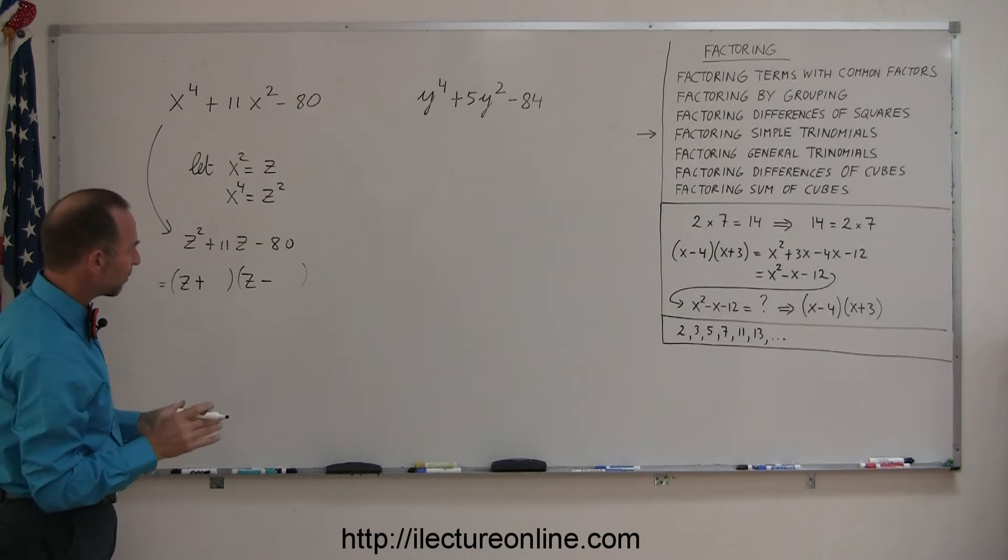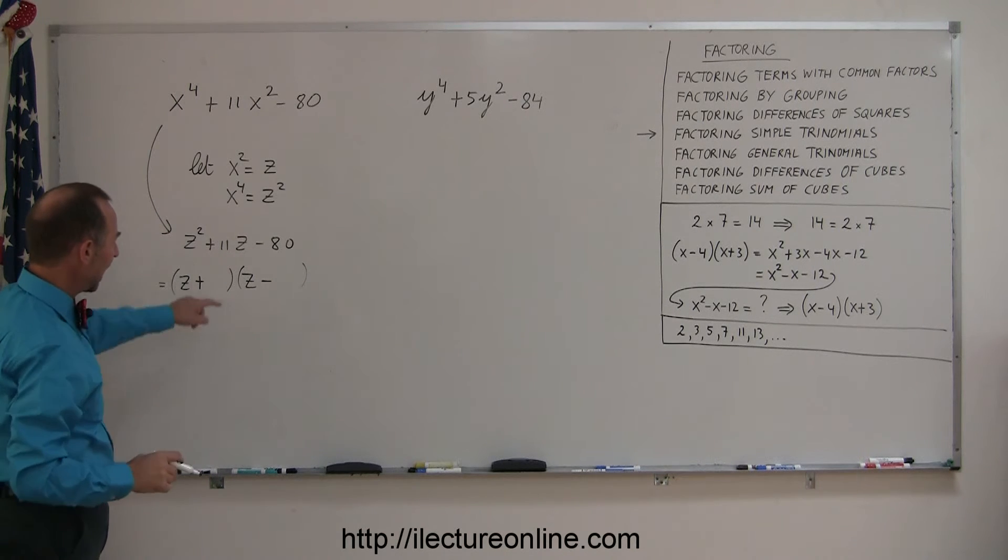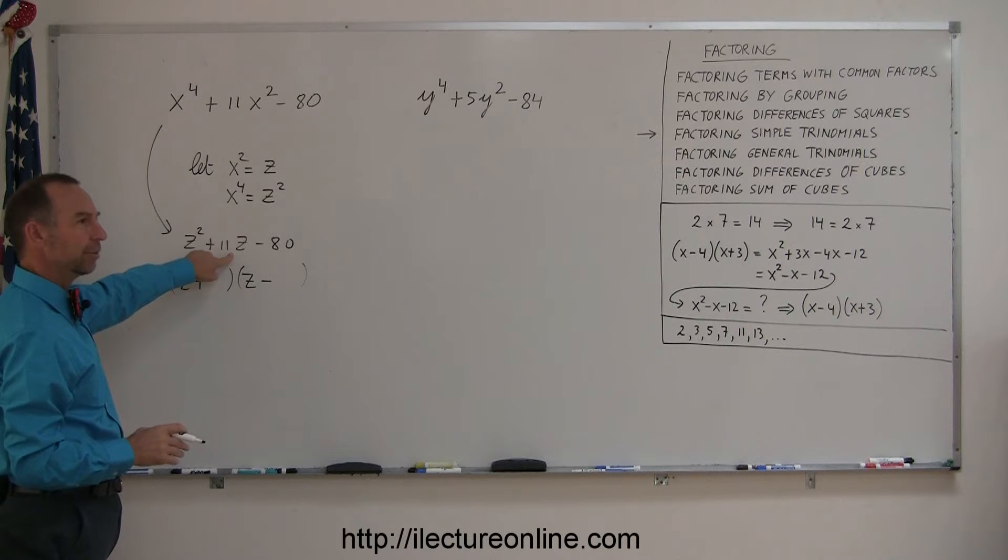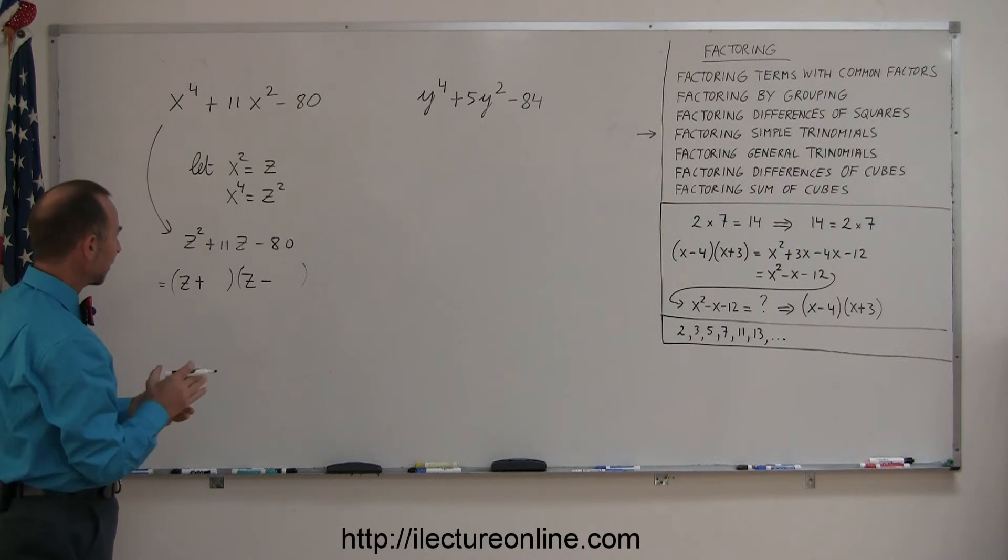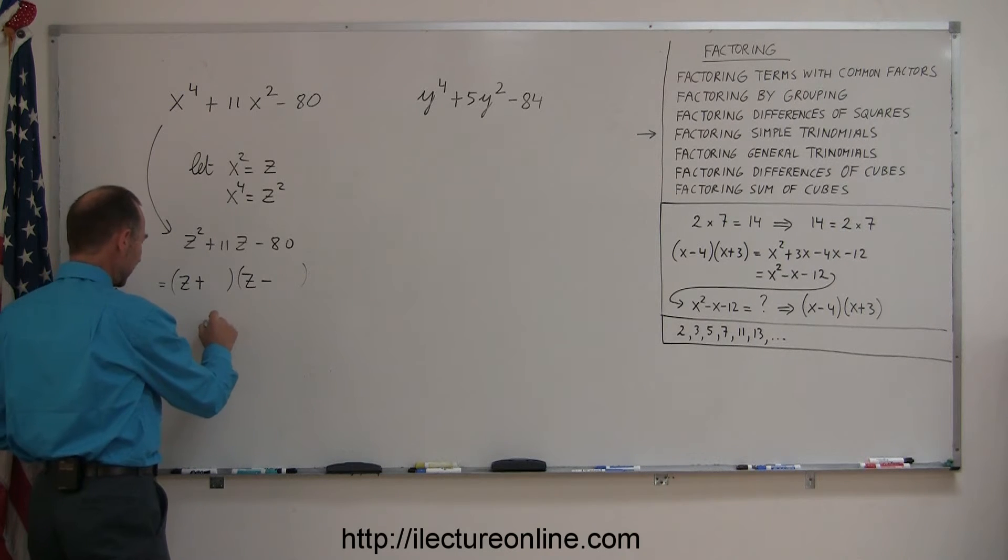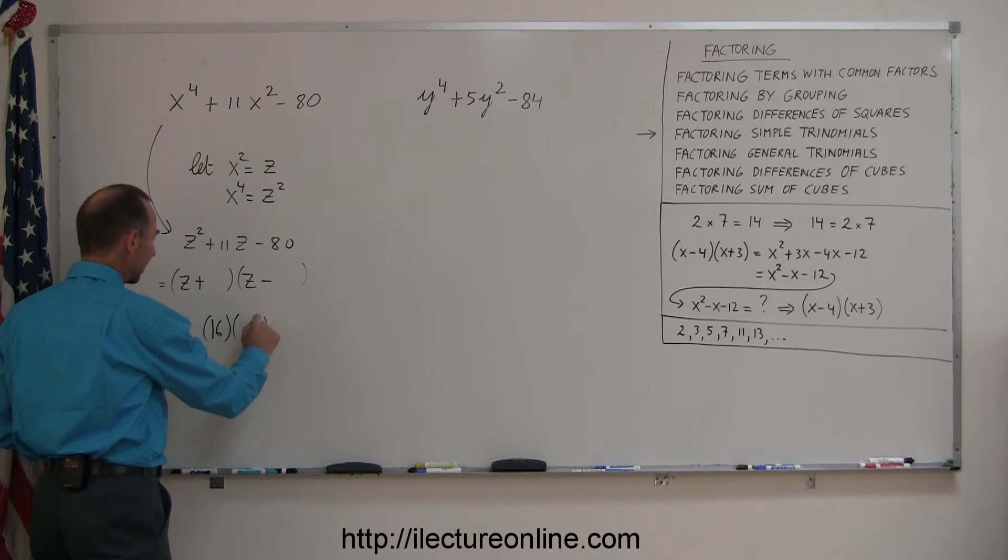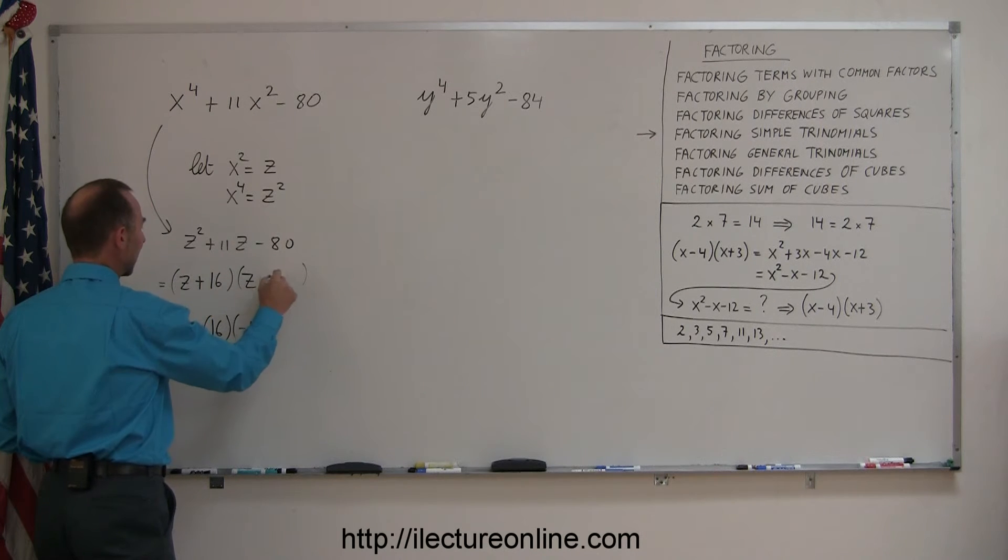I'm looking for two numbers, when I multiply I get 80, and when I add them together I get a positive 11. So one is a positive number, the other one is a negative number, and they differ by 11. If you think about it a little bit, I think 16 and 5 will work. You'll need a negative 5, because if you add them together you'll get a positive 11, if you multiply them together you get a negative 80. So positive 16 and negative 5.